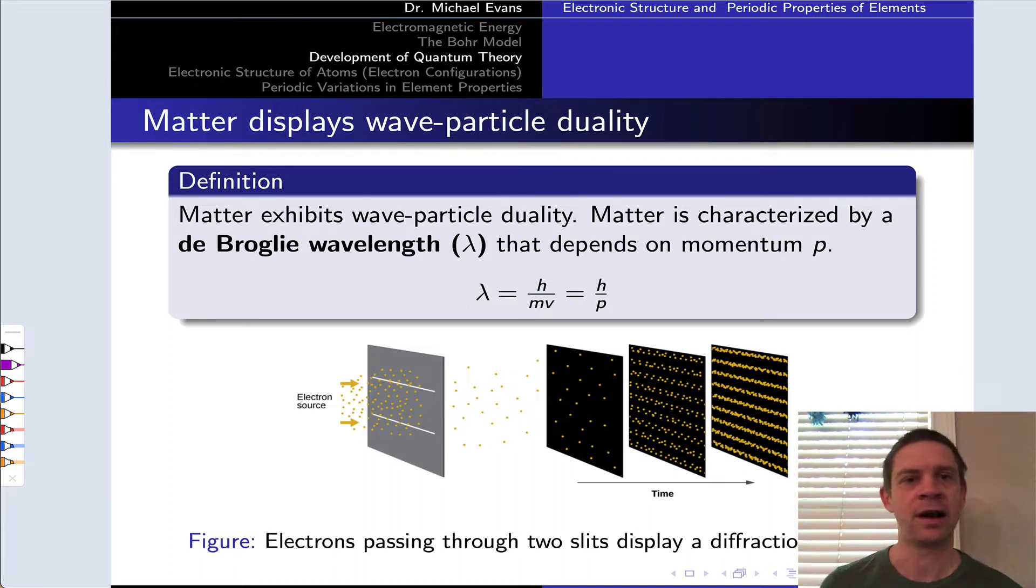For example, with electrons appearing to occupy specific orbits and jumping between those orbits as photons are absorbed or emitted.